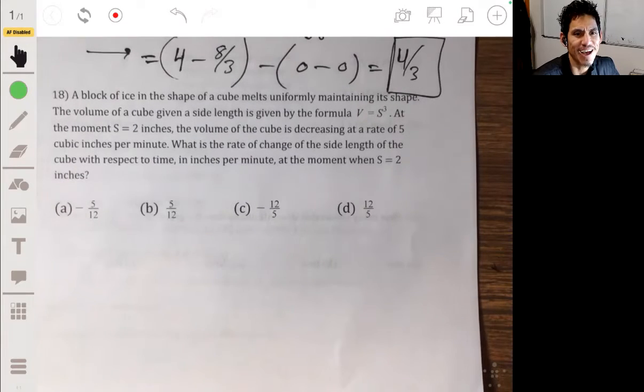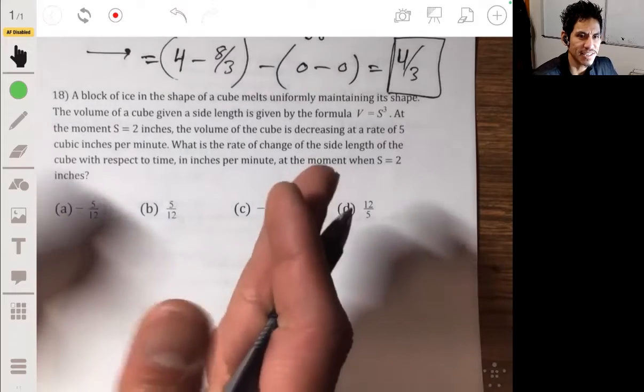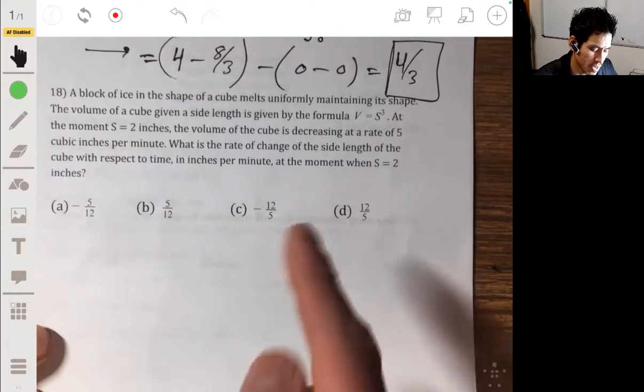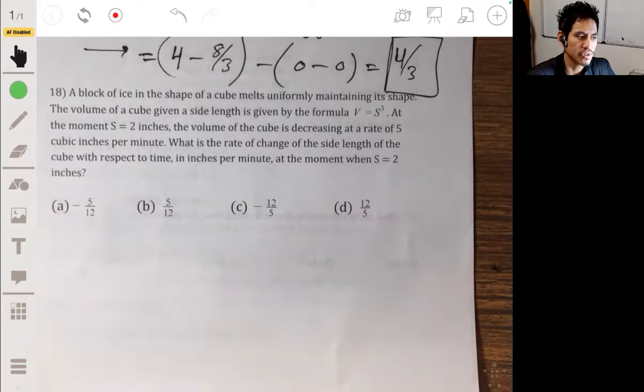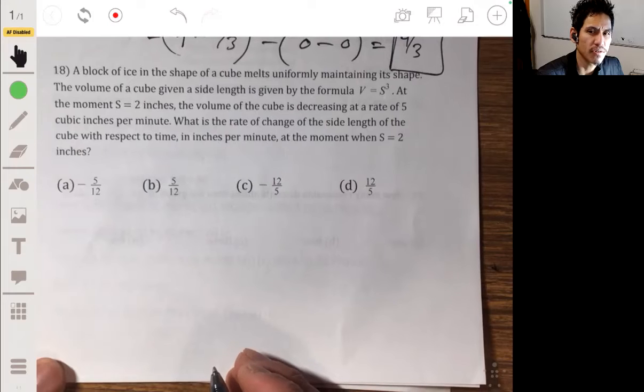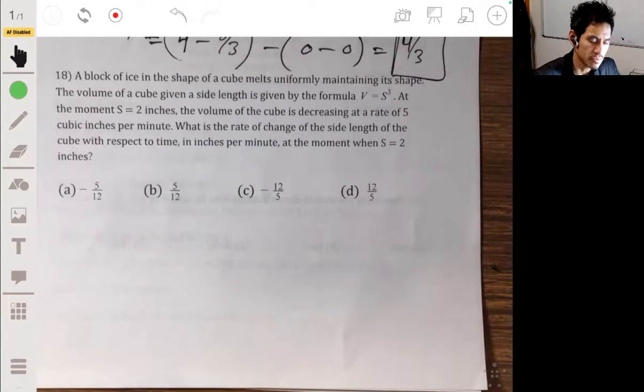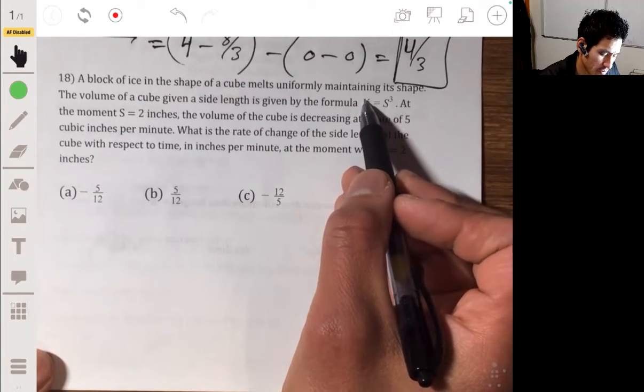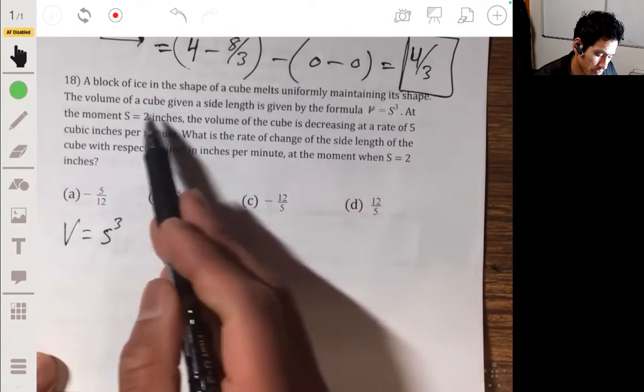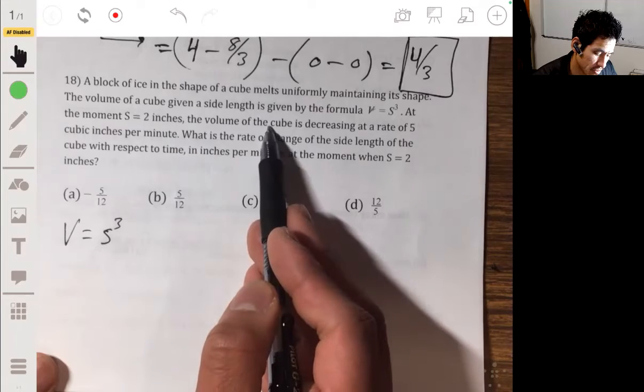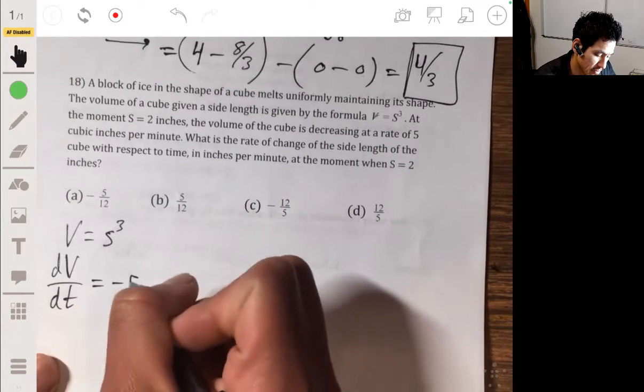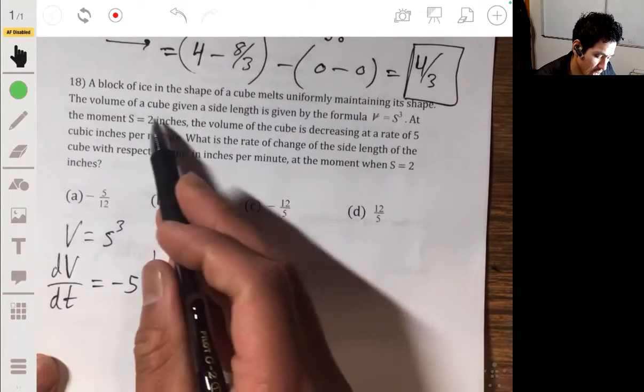And students struggle with these, I think, because they see this long paragraph and then they freak out because they spend a minute reading it. Just always remember that it's really just using the chain rule correctly and don't overthink what you got to do. So the volume here is V, we have V equals S cubed. We're told that the volume at the moment when S equals 2 inches, that the volume is decreasing at a rate of 5 cubic inches per minute. So we can say dV/dt equals negative 5, and that's going to be when S equals 2.